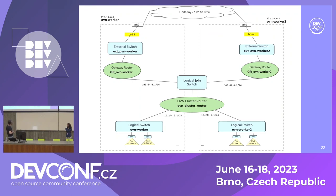Every node in the cluster gets a host subnet — a subset of the whole cluster network, specific per node — and all pods on that node will only have IPs from that host subnet. Starting at the bottom, every pod gets its own logical switch port. During pod creation, we create a VEF pair: one end gets connected to the pod net namespace and the other gets plugged into an OVS switch, represented as a logical switch in OVN. If two pods are on the same node they use that local logical switch with no need for traffic to traverse node boundaries.